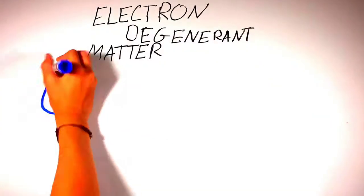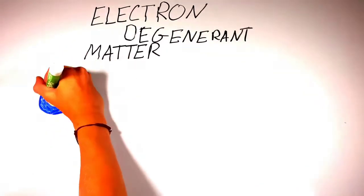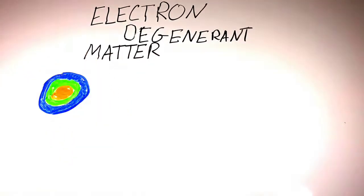Next up is electron degenerate matter. It is basically highly compressed matter which is often found in star cores.